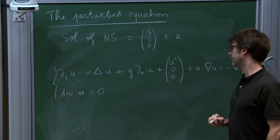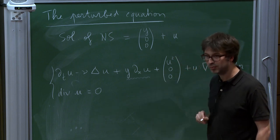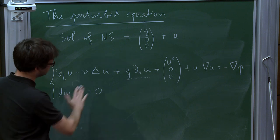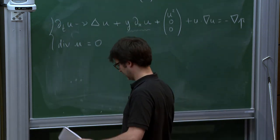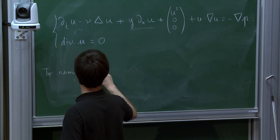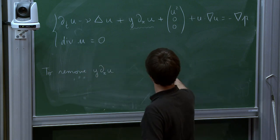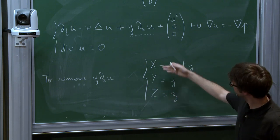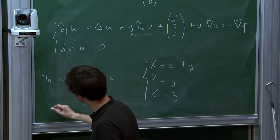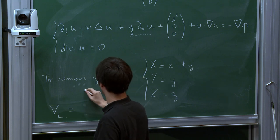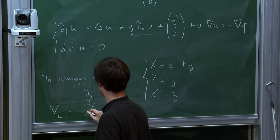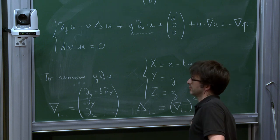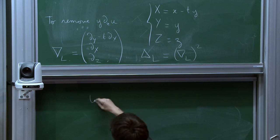And of course, the divergence of u is still zero. Okay, so it turns out that it's a good idea to try and remove this convection term, and this can be done easily by changing the independent variables, though it comes to the expense of modifying the differential operators. So let's do that. So if you, to remove y dx u, what you do is you set capital X equals x minus ty, capital Y equals y, capital Z equals z, and you rewrite the equation in these new variables.